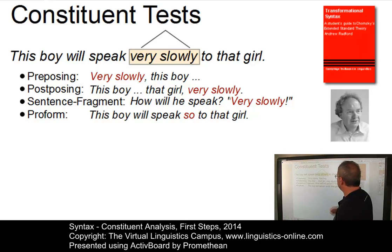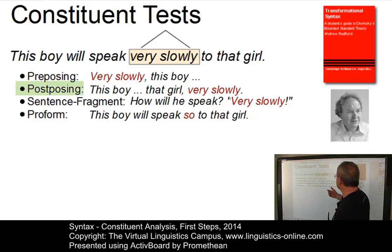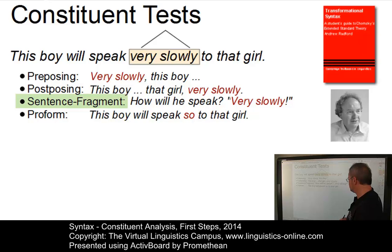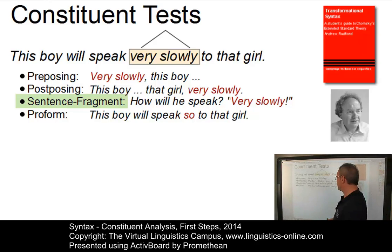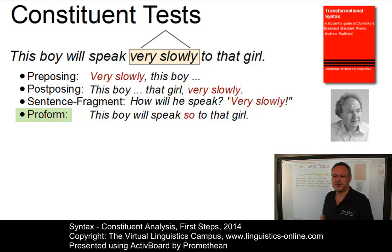We said that we can pre-pose it: 'Very slowly this boy will speak to that girl.' Or that we can post-pose it: 'This boy will speak to that girl very slowly.' We can use 'very slowly' as a sentence fragment — 'How will he speak? Very slowly.' And last but not least, we can use a pro-form, namely 'so', to replace 'very slowly': 'This boy will speak so to that girl.'